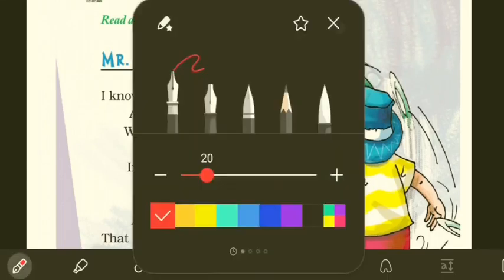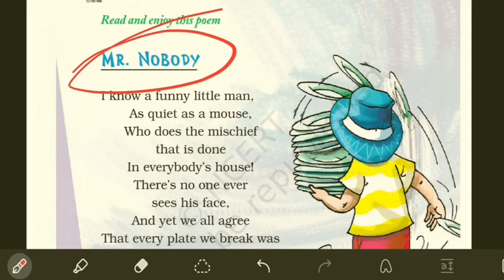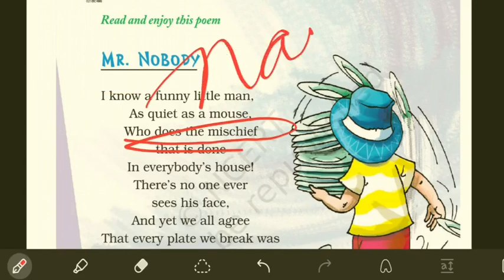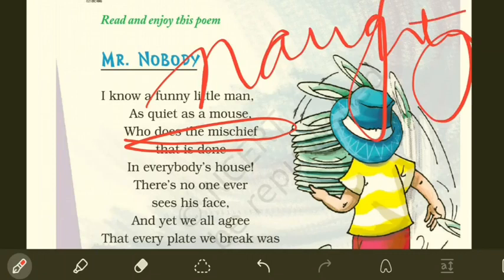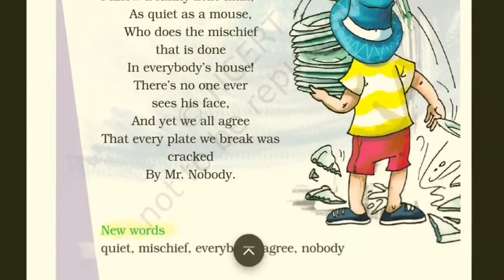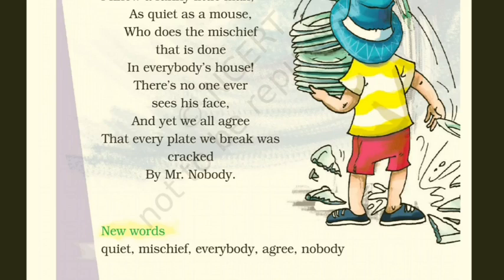So class, it's a lovely little poem about someone called Mr. Nobody — we don't know who this Mr. Nobody is. He's as quiet as a mouse — the tiny rodent which moves around quietly. He does the mischief in everybody's house. Mischief means naughtiness, like not listening to elders and moving around uninvited. No one ever sees his face, yet we all agree that every plate we break was cracked by Mr. Nobody.